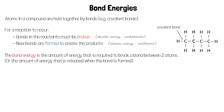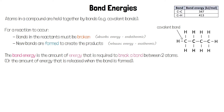Forming bonds is an exothermic process, so it releases energy. The bond energy is the amount of energy required to break a bond between two atoms, and also the amount of energy released when that bond is formed. This table shows the energy required to break two different bonds: a carbon-carbon bond, which requires 347 kJ per mole to break, and a carbon-hydrogen bond, which requires 413 kJ per mole to break.